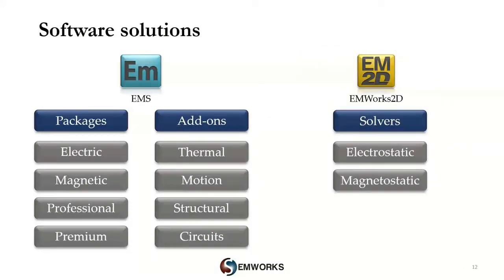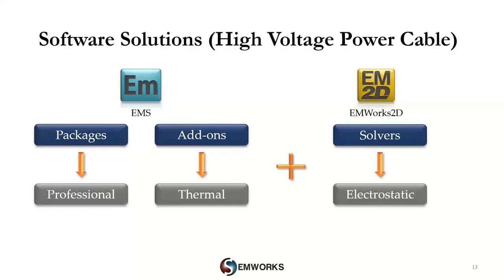We used EMS 3D and EMWorks 2D products to study and analyze a high voltage power cable. EMS 3D offers electrical and magnetic solvers, plus multiphysics options like thermal, motion, linear statics, and circuits. EMS software is available in four package options: electric, magnetic, professional, and premium. EMWorks 2D currently offers only static solvers — electrostatic and magnetostatic — and can be accessed when EMS software is purchased. To simulate a high voltage power cable, the professional package with thermal add-on within EMS 3D and the electrostatic solver within EMWorks 2D should be used.